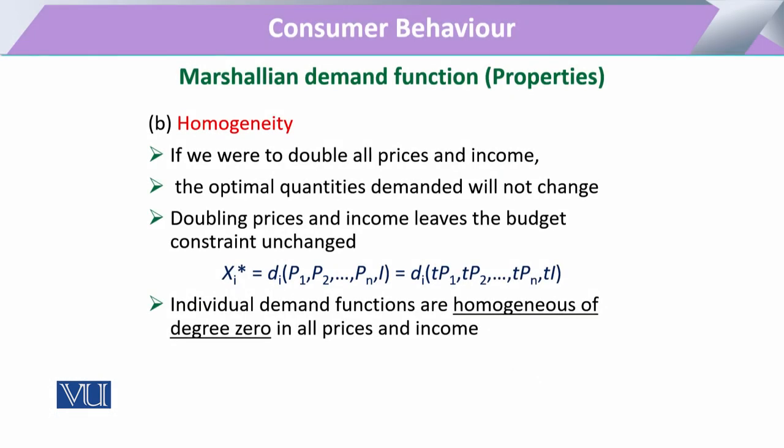The second property is homogeneity. If we increase the units of the demand function — meaning the prices of good x1, good x2, and any other — and make them all double, the total function is multiplied by the same unit. So if we double the prices and at the same time double the income, the output level of consumption that the consumer demands will remain the same as before.